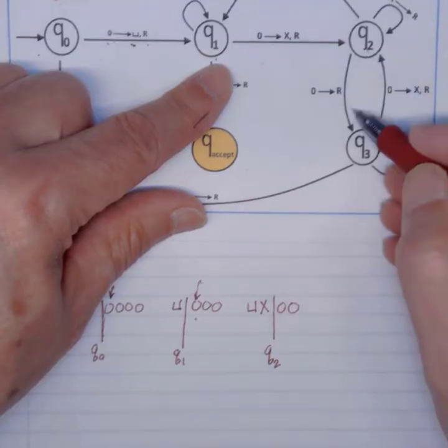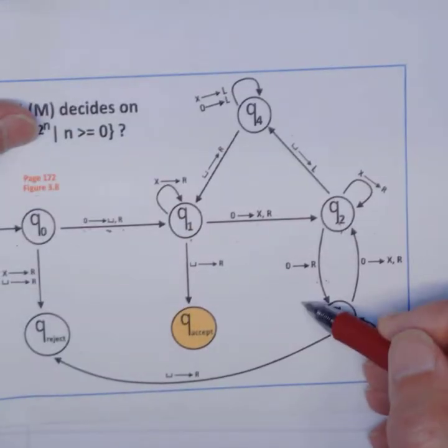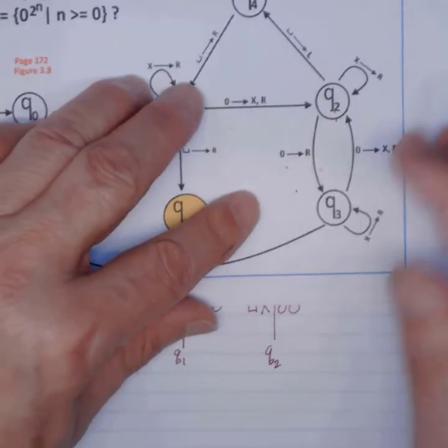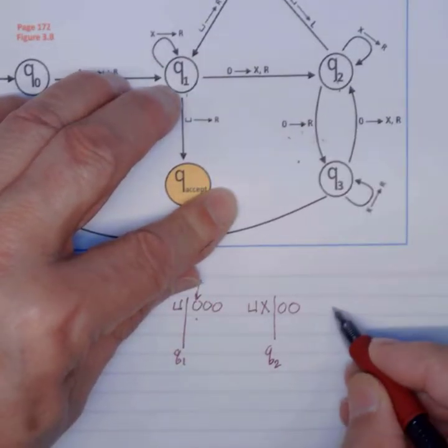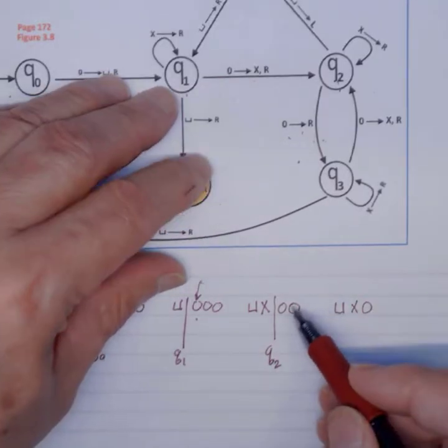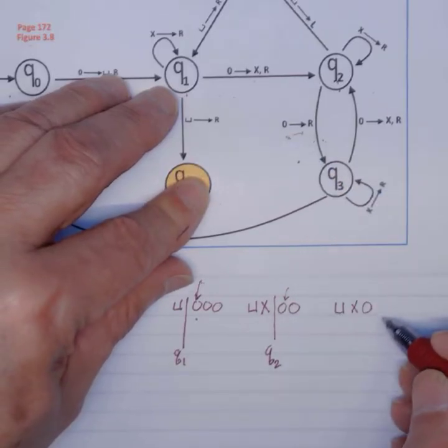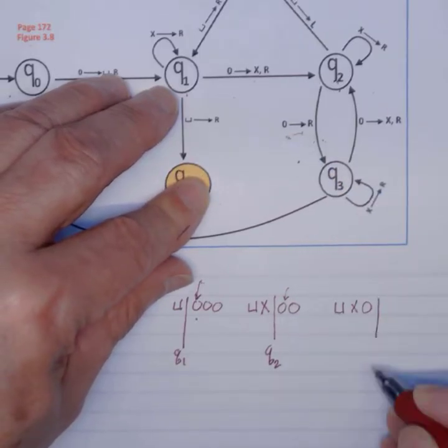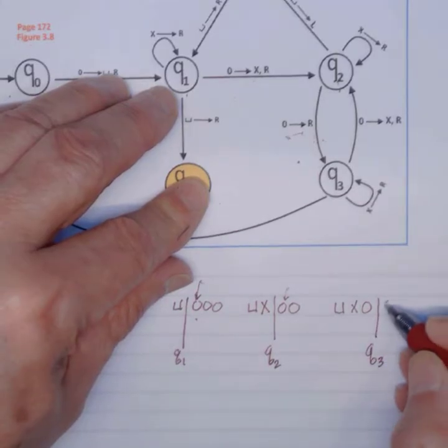Now, do I have a transition on a 0? Yes, we do. When I'm at Q2, and when I see a 0, I move right to Q3. And I don't change it. So here we go. Blank, X. Don't change that. Keep it the way it is, because it says don't change it. And then here's my Q3. And I have one 0 left.